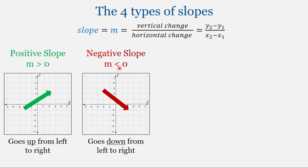Then we have negative slopes. With a negative slope, the value is less than zero. And as we read this graph from left to right, the line goes down. So for these two cases, we have an increasing slope, or a positive slope, and a decreasing slope, or a negative slope. These are the examples we have looked at in the previous videos.